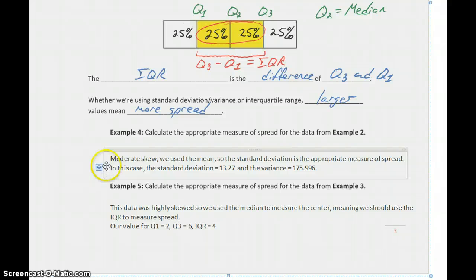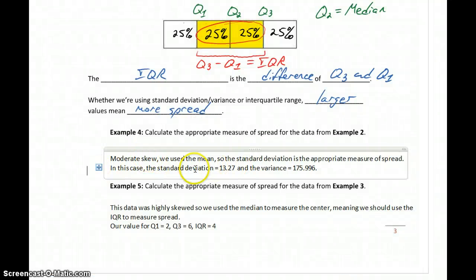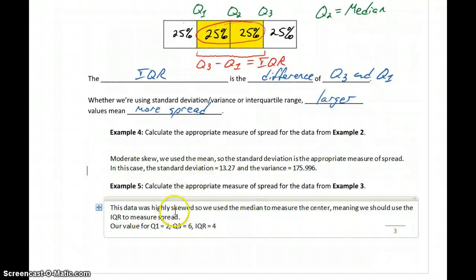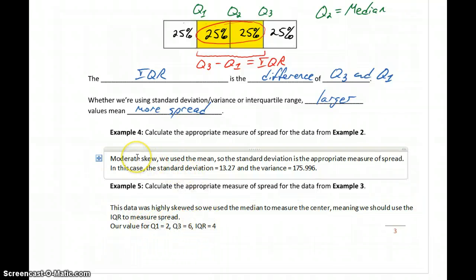So when we have the case where our data was moderately skewed, we look at the standard deviation, or we could look at the variance, but primarily standard deviation. When we have data that's highly skewed, we look at the interquartile range. So it's the difference between whether our data is moderately skewed or symmetric. We use the mean and standard deviation. When our data is highly skewed, then we consider the median and interquartile range.